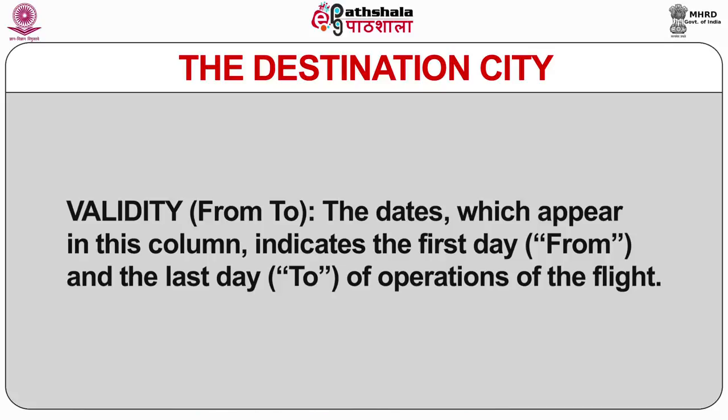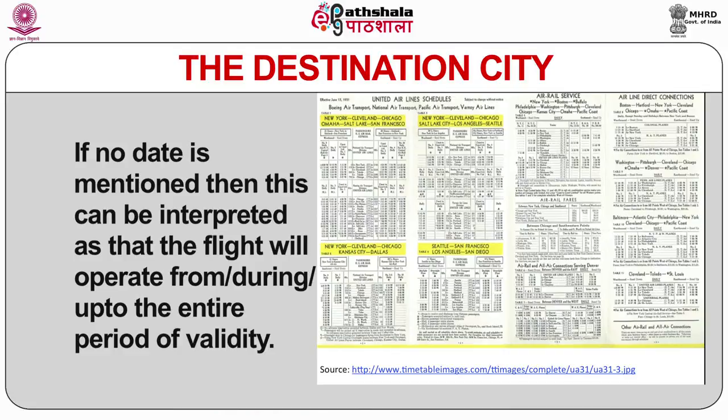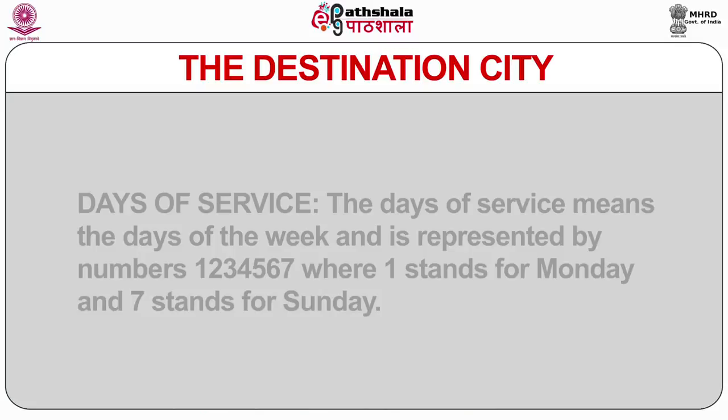Flight details should be read across the line from left to right. The Validity column shows the first day (from) and the last day (to) of operations. If no date is mentioned, the flight operates during the entire period of validity.